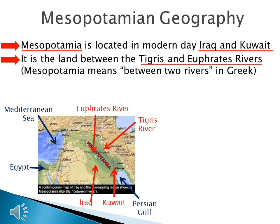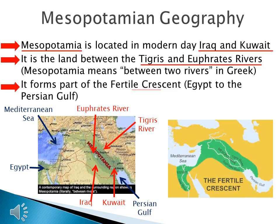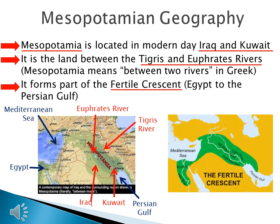Mesopotamia forms part of something that we call the Fertile Crescent. This is basically land where we see civilizations develop in the ancient era. The Fertile Crescent begins in the east at the Persian Gulf, goes through Mesopotamia, goes down the coast of the Mediterranean Sea, and ends in Egypt. Go ahead to the next slide.